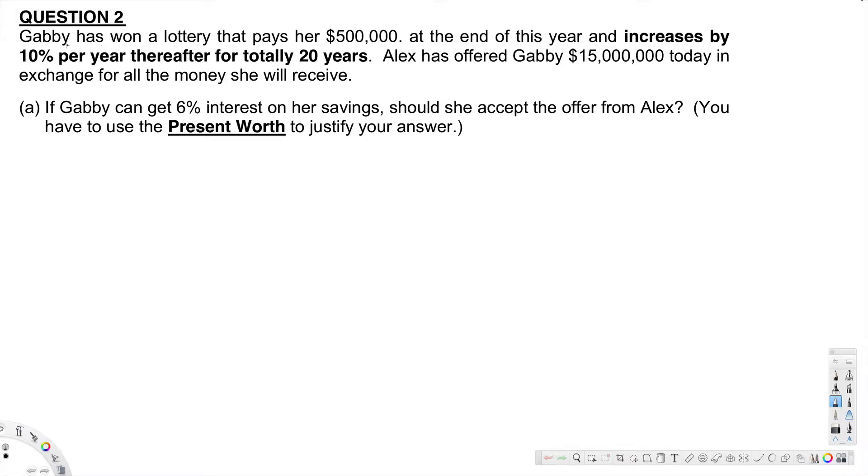What's going on guys, let's look at this problem right here. This question is asking: Gabby has won a lottery that pays her $500,000 at the end of this year and increases by 10% per year thereafter for totally 20 years. Alex has offered Gabby $15 million today in exchange for all the money she will receive.